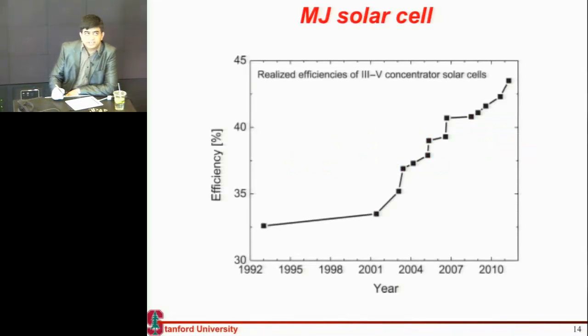This field is seeing a lot of progress recently. I've taken this chart which shows the efficiencies of these multi-junction solar cells as they have been reported in the literature and verified by NREL. If you look at the efficiency chart for crystalline silicon or single junction gallium arsenide, you'll see these have saturated.